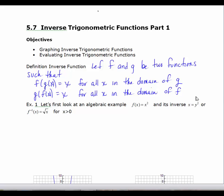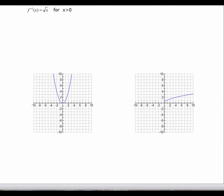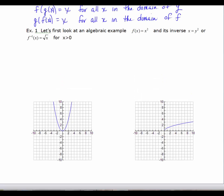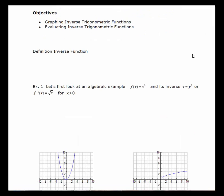So as far as graphing is concerned, if we look at an algebraic example of f of x equals x squared and its inverse x equals y squared, or the inverse is the square root of x for x is greater than zero. Here we have to restrict the domain of the original function, because remember, a function has an inverse as long as the function is one to one. And since the graph of f of x equals x squared is not a one to one function, we need to restrict the inverse.